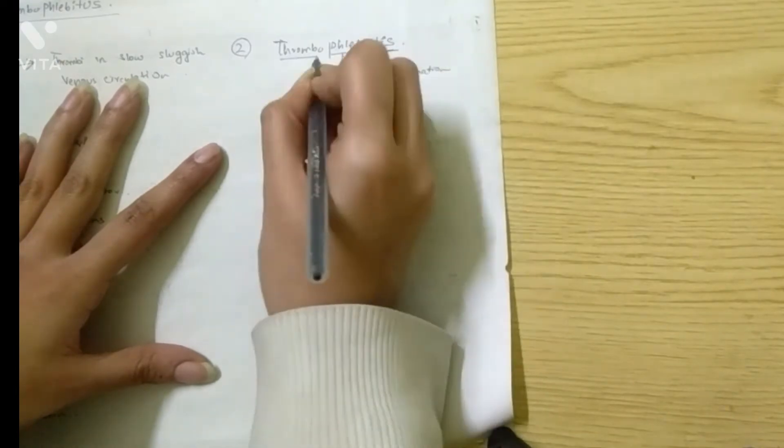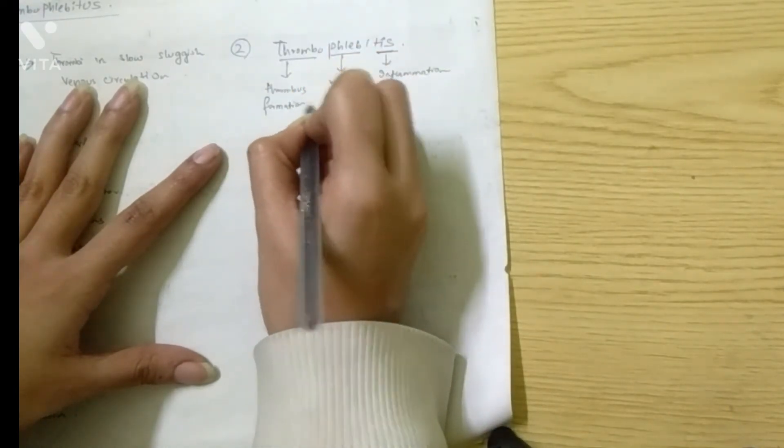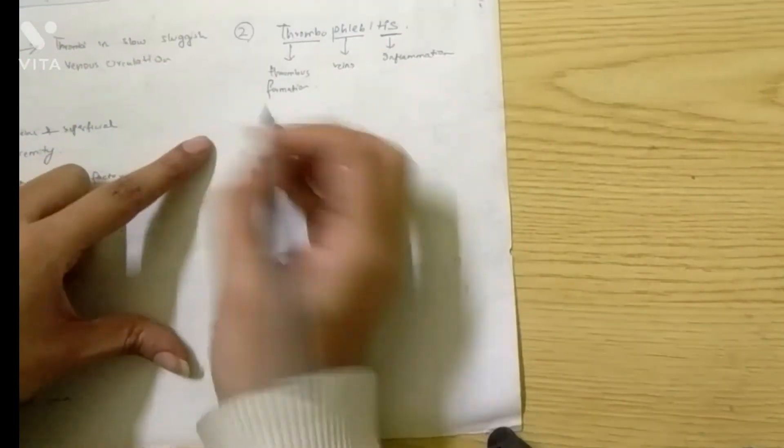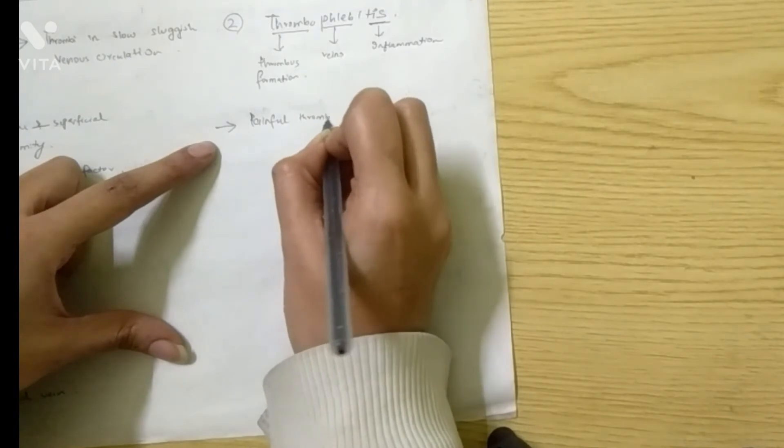Phlebo, already discussed, means veins, and thrombus means thrombus formation. So there is thrombus formation in the vein which has led to inflammation. It is characterized by painful thrombosed veins.